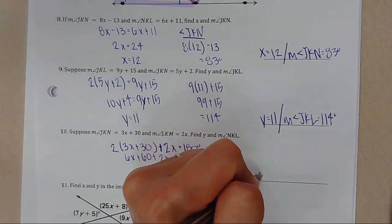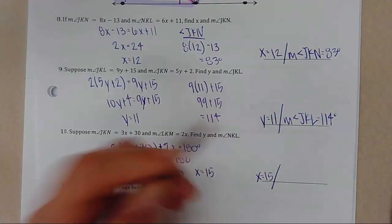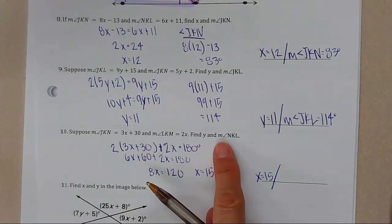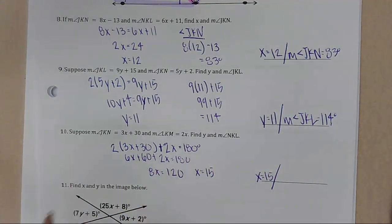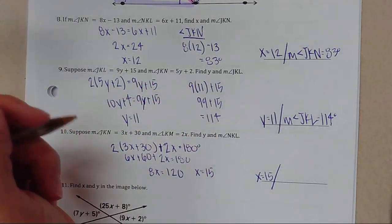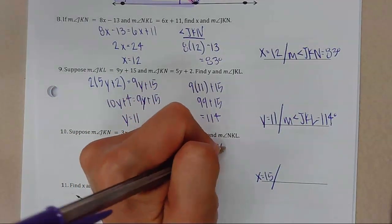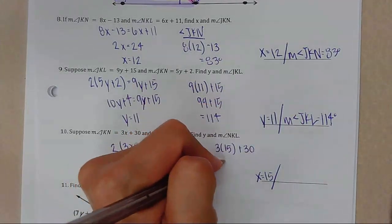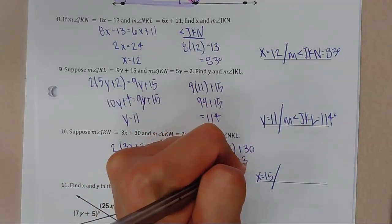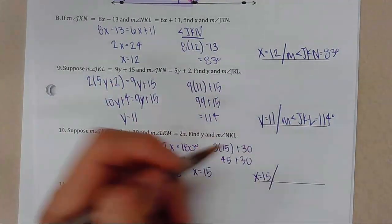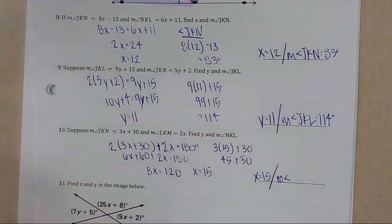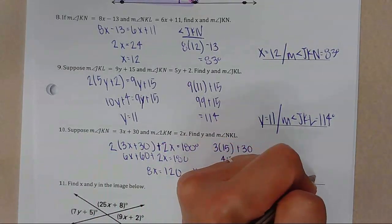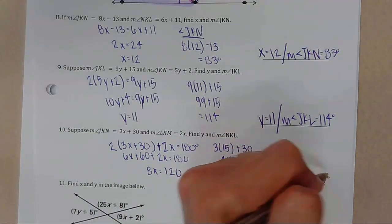With x = 15, find angle NKL: 3(15) + 30 = 45 + 30 = 75. So the measure of angle NKL equals 75 degrees.